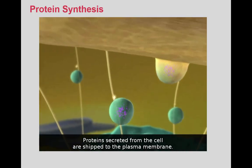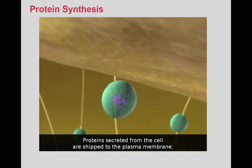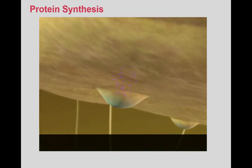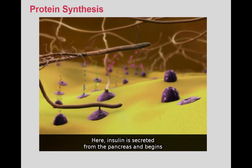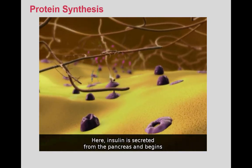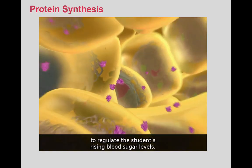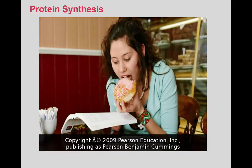Proteins secreted from the cell are shipped to the plasma membrane. Here, insulin is secreted from the pancreas, and begins to regulate the student's rising blood sugar levels.